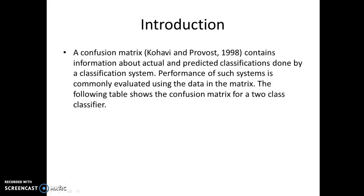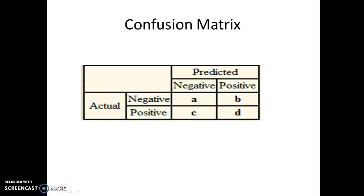The following table shows the Confusion Matrix for a two-class classifier, though we can also use a multiple-class classifier for Confusion Matrix representation. Here we are representing this in a table form, with predicted and actual values on the axes, using negative and positive labels for both predicted and actual values.